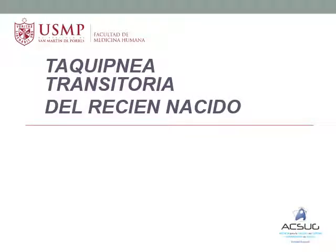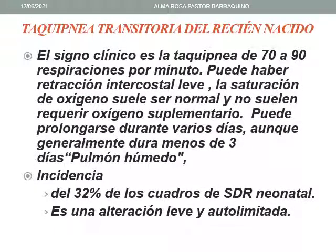Veremos ahora la taquipnea transitoria del recién nacido. El signo principal es la taquipnea de 70 a 90 respiraciones por minuto. Puede haber retracción intercostal leve. La saturación de oxígeno suele ser normal y no suele requerir oxígeno suplementario. Puede prolongarse durante varios días aunque generalmente dura menos de 3 días. Se le conoce también como pulmón húmedo. La incidencia es del 32% de los cuadros del síndrome de distrés respiratorio neonatal. Es una alteración leve y autolimitada.